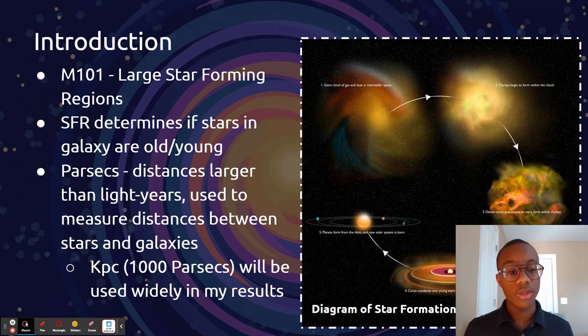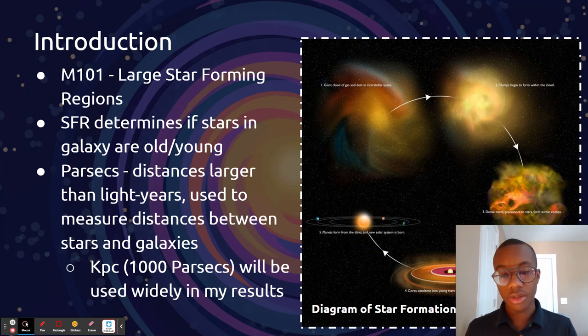You can see how stars are formed on the right. A large cloud of gas and dust comes together, coalesces into a star. Occasionally, a solar system will form around it.